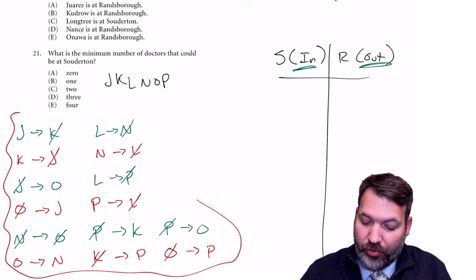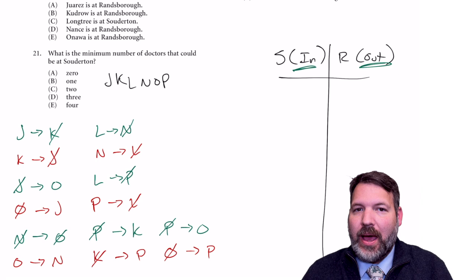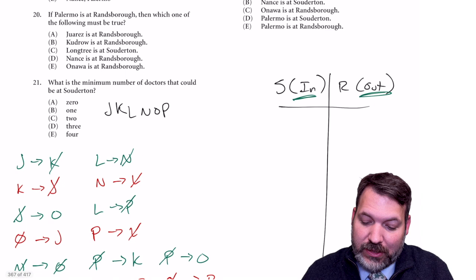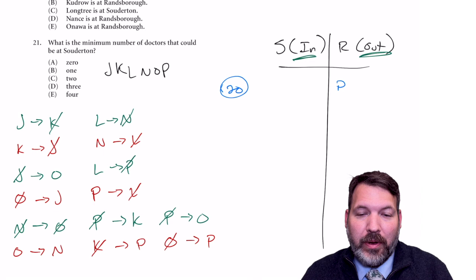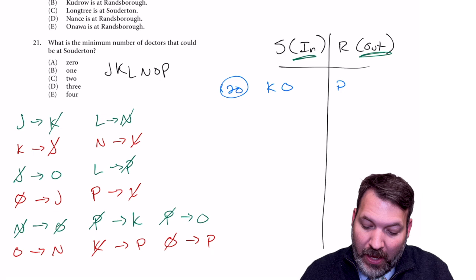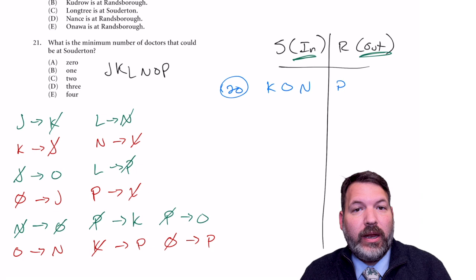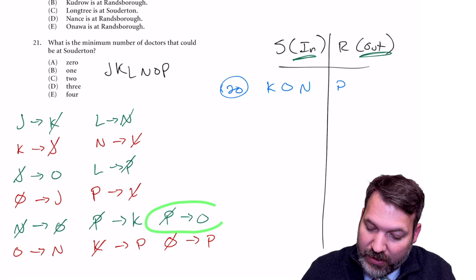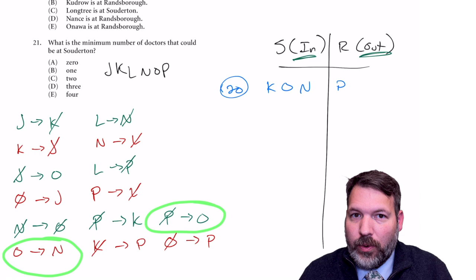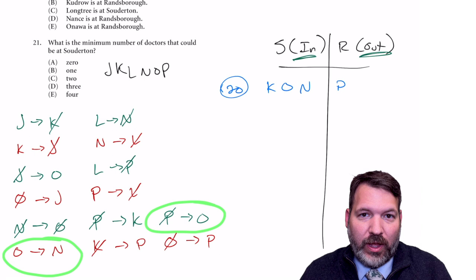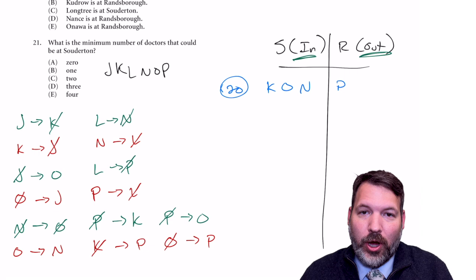I don't recommend chaining all these statements together upfront — that's a bad use of your time because any chain happens naturally on specific questions. For example, question 20: 'if P is out, which must be true?' The last clue activates: K is in, O is in. Then if O is in, N is in. Then if N is in — this is what we call domino deductions — L is out. We're doing the chain as we answer, not in advance.